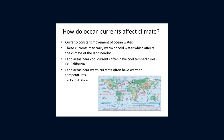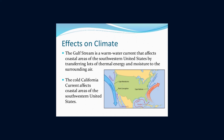The ocean currents transfer heat from lower latitudes to higher latitudes. The temperature of coastal areas is affected by the ocean current that washes it — a cold ocean current has a cooling effect, and a warm ocean current has a warming effect. The wind which blows over a warm ocean current also becomes warm, so it has a warming effect on coastal areas. That is why the Gulf Stream, which is a warm ocean current, has a warming effect. On the other hand, the cold California Current lowers the temperature, because the wind that blows over it also becomes cold.